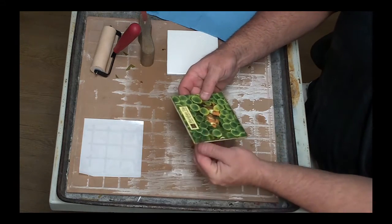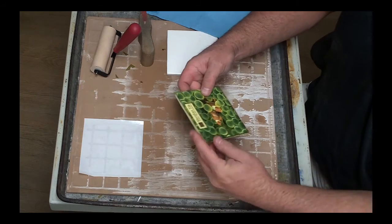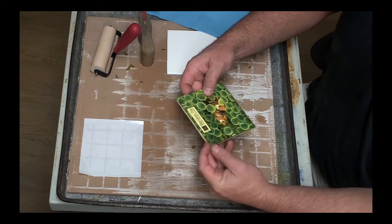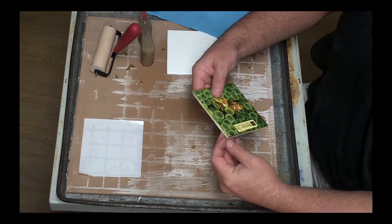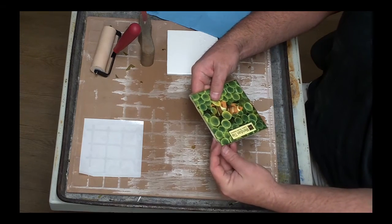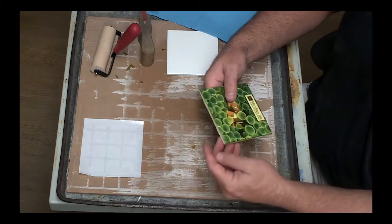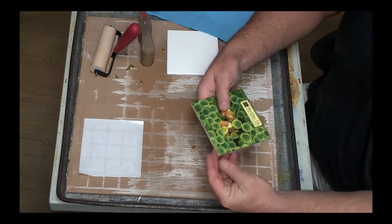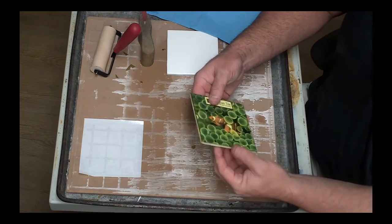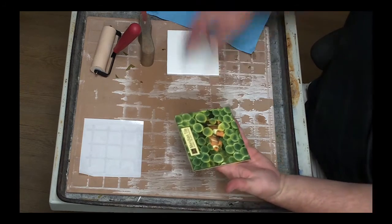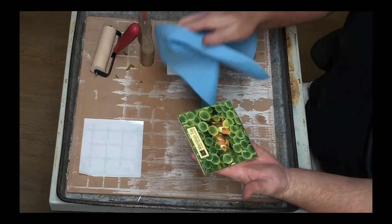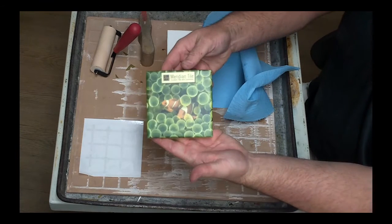All right now we're going to press the edges. Make sure everything is down, nothing is flaring out. We're going to pinch the corners as well. This will ensure a nice clean edge when it's fired. Now we got all those. We're going to make our way to the kiln.